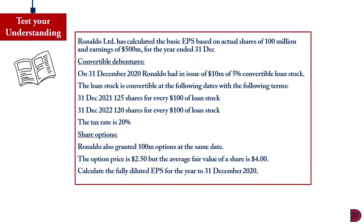Let's test our understanding. Ronaldo Limited has calculated the basic earnings per share based on actual shares of 100 million and earnings of $500 million for the year ended 31 December. For convertible debentures, on 31 December 2020, Ronaldo had an issue $10 million of 5% convertible loan stock. The loan stock is convertible at the following dates with the following terms. On 31 December 2021, 125 shares for every $100 of loan stock. On 31 December 2022, 120 shares for every $100 of loan stock. The tax rate is 20%. For share options, Ronaldo also granted 100 million options at the same date. The option price is $2.5 but the average fair value of a share price is $4. We have to calculate the fully diluted earnings per share for the year to 31 December 2020.